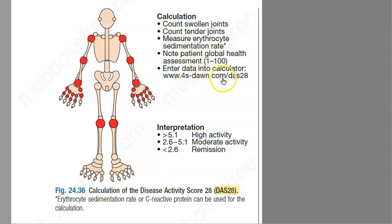And all this you will add and put it in one calculator which they have here. And then if the score is greater than five, then high activity. This is a highly active disease. If it is less than 2.6, remission. And between, it is moderate activity. Based on this, you will give the treatment.